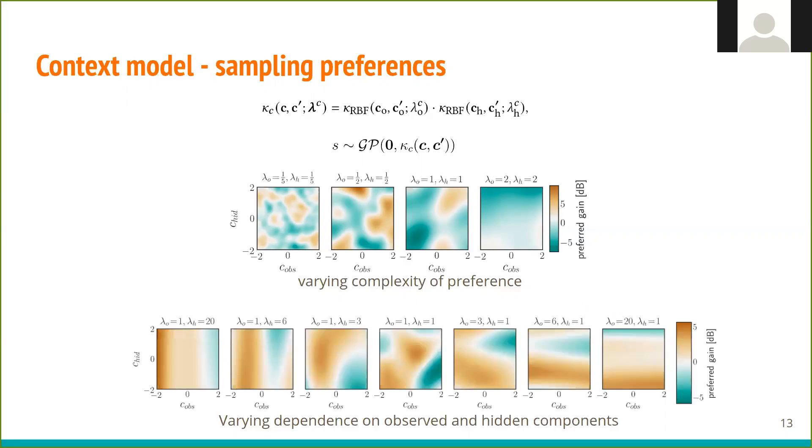We can also modify only one lambda at a time, to control the contribution coming from observed or hidden features. Here we can see how the preferences change from being completely defined by observed features, to being completely defined by hidden features.